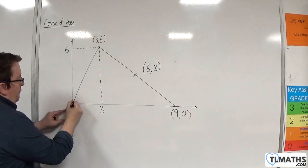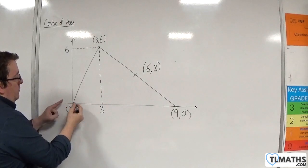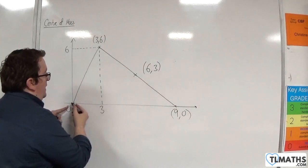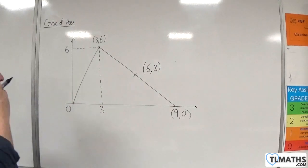So then from my origin to that point, that is a median. And I want to go two-thirds of the way along that line.